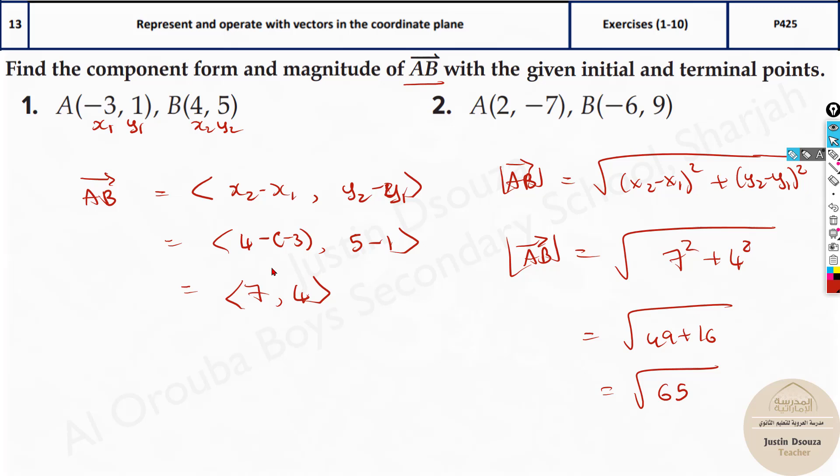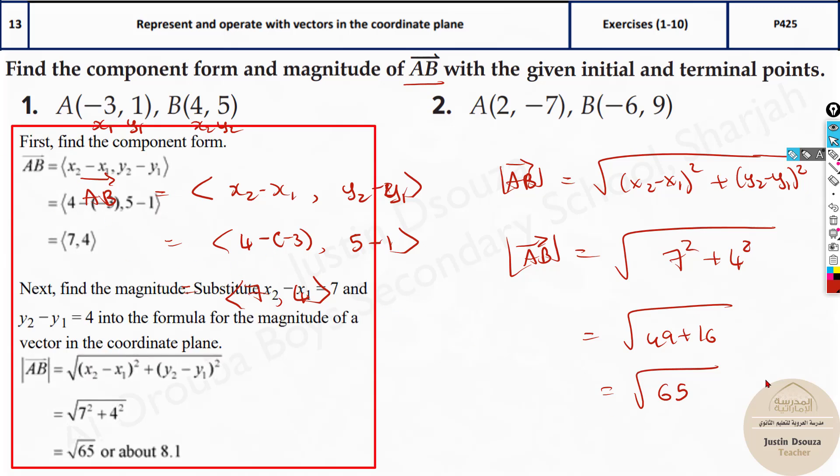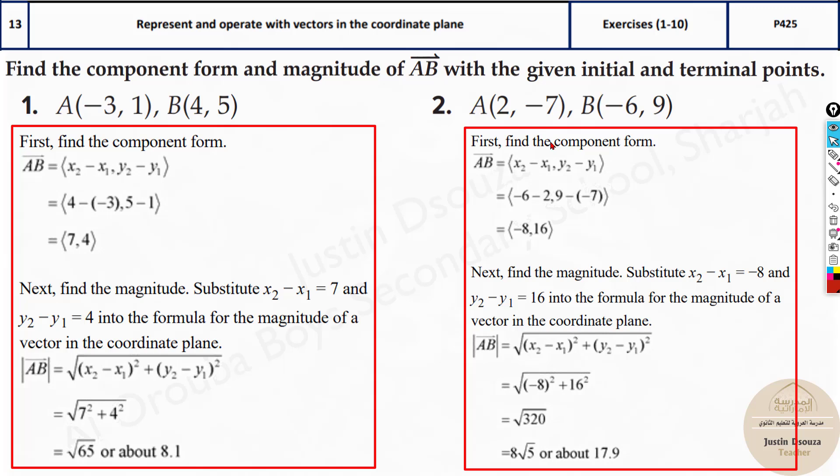This is the answer for the component form on the left side over here with the diamond brackets and the magnitude is over here. Now you can put it in the calculator. It is just over 64. So it is over 8, it is 8.1. Just those two formulas and you can easily solve them up. Because they have asked you the component form, first find the component form and then just use this directly and solve it up.